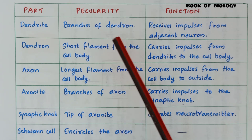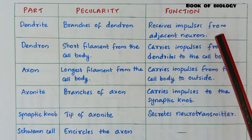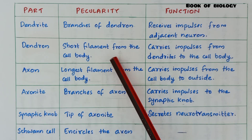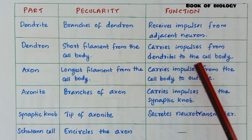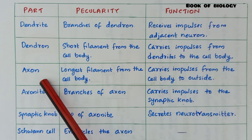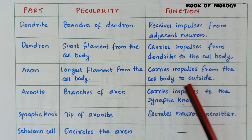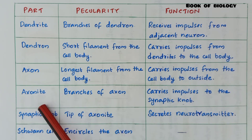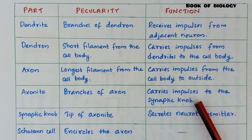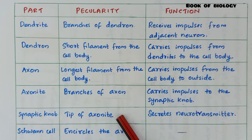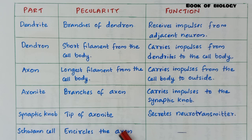Dendrite: branches of dendron; receive impulses from adjacent neuron. Dendron: short filaments from the cell body; carry impulses from dendrite to the cell body. Axon: longest filament from the cell body; carries impulses from the cell body to outside. Axonite: branches of axon; carries impulses to the synaptic knob. Synaptic knob: tip of axonite; secretes neurotransmitter. Schwann cell: encircles the axon.